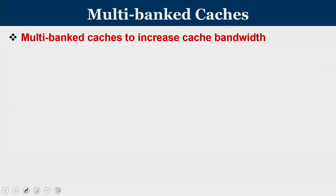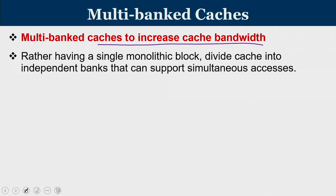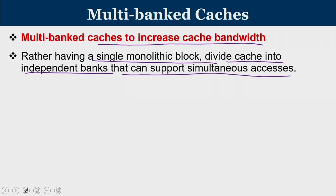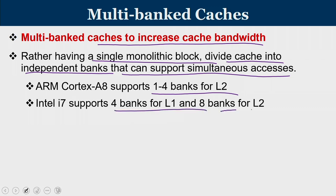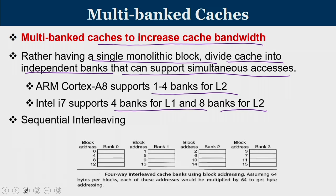Next is the multibanked cache optimization, which increases cache bandwidth — the number of blocks that can be supplied from cache to processor. Rather than considering the cache as a single monolithic block, we divide it into independent banks that support simultaneous access. ARM Cortex-A supports 1 to 4 banks for L2; Intel i7 supports 4 banks for L1 and 8 banks for L2. This is typically done with sequential interleaving.